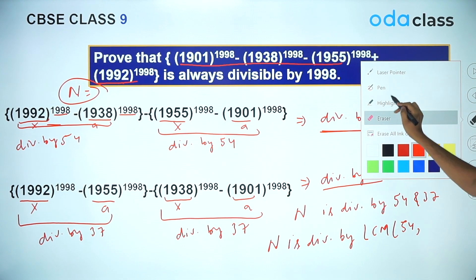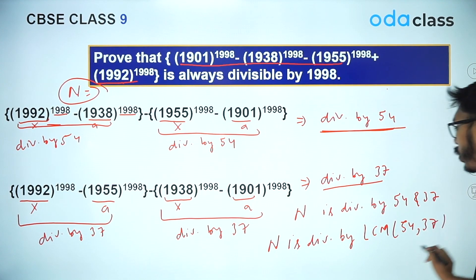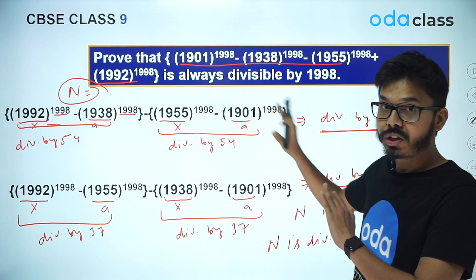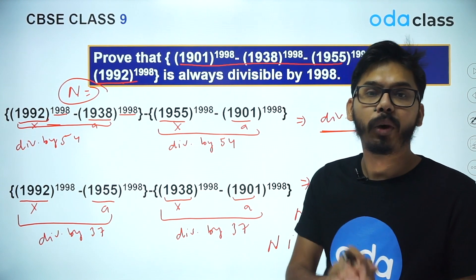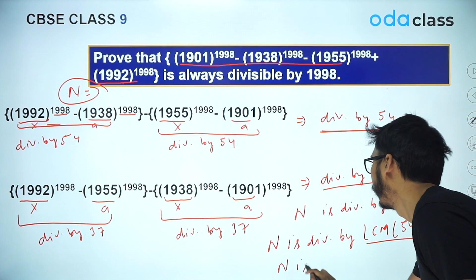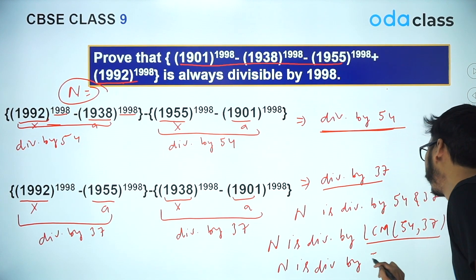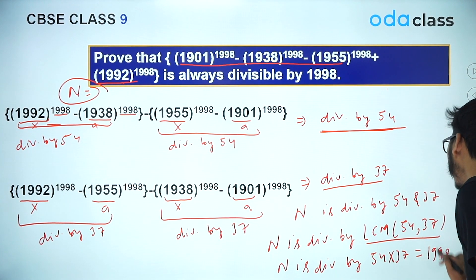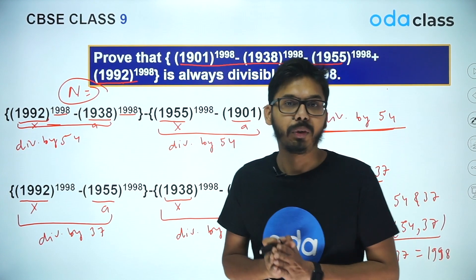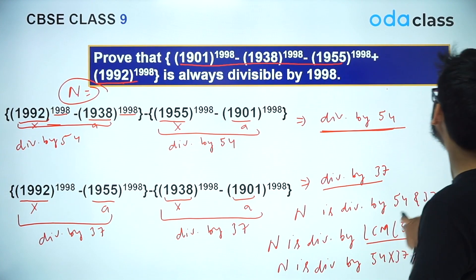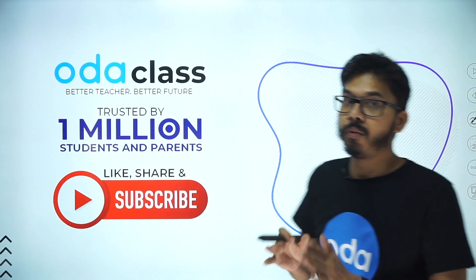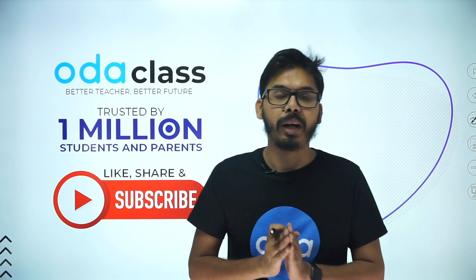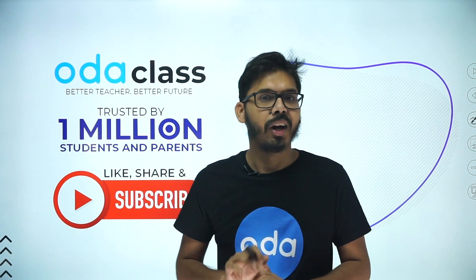Since 54 and 37 are co-prime numbers, their LCM is simply their product: 54 × 37 = 1998. So the expression is divisible by 1998 — that's where the question was tricky. These were the most important questions from today's video. If you understood these two questions and the theorem, do like this video. For more such videos, subscribe to ODA class. See you guys in the next video, bye!